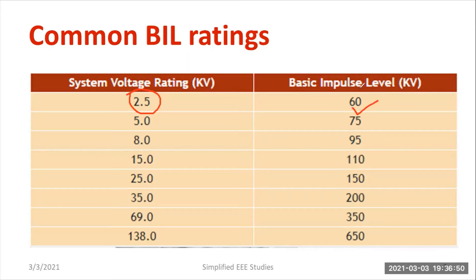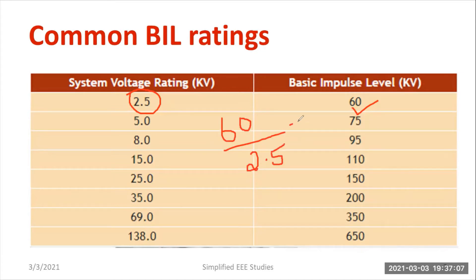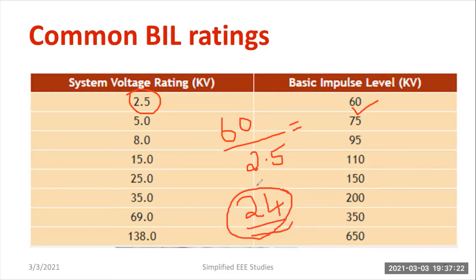Whenever you are going to design an insulation material, you have to maintain the dielectric strength of that particular material equal to 60 kV. That means BIL equals 60 divided by 2.5, which is 24. That means you are maintaining the insulation level for more than 24 times the operating voltage.